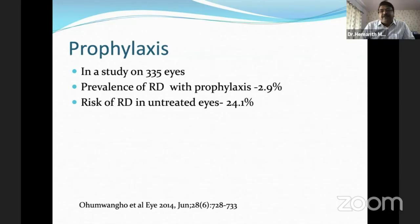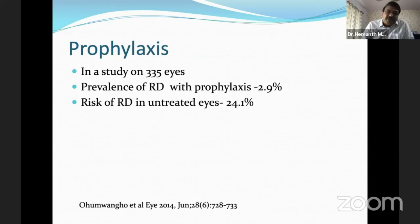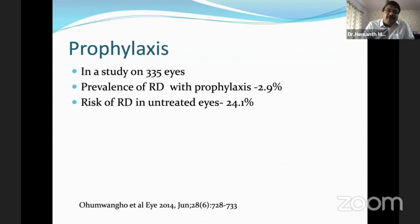Can we prevent retinal detachment? A study on 335 eyes found that the prevalence of retinal detachment with prophylaxis was about 2.9%, while the risk in untreated eyes was 24.1%. This clearly shows there is a role for laser prophylaxis in patients with choroidal coloboma without retinal detachment. Remember, these are children, so general anesthesia may be required. One must also avoid the fovea, macula, and disc margin; the type of coloboma determines treatment feasibility.